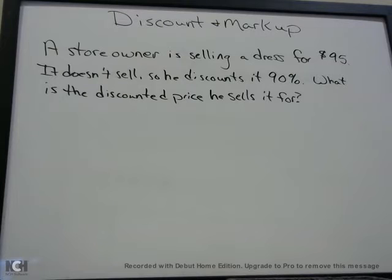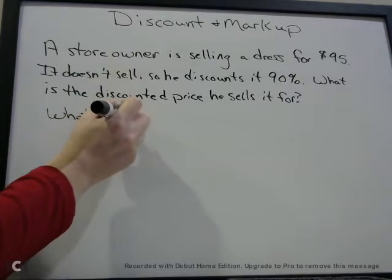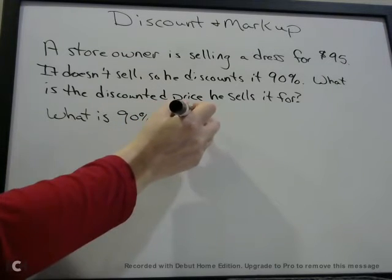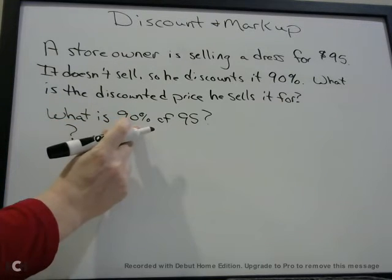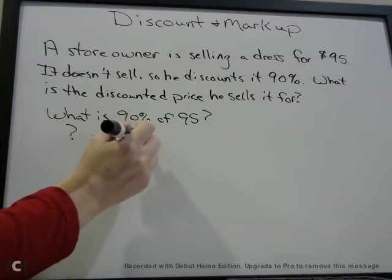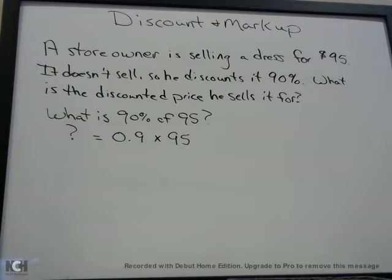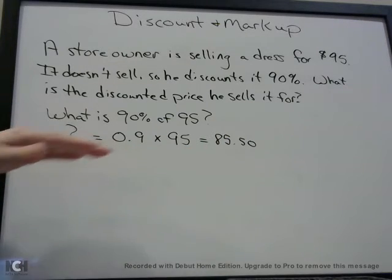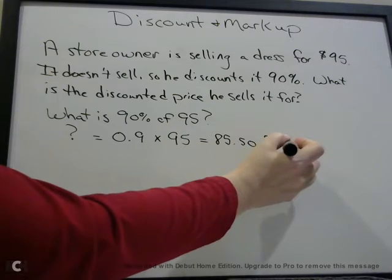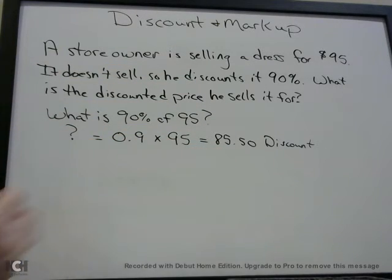You're selling it for $95 and you decide to take 90% off — discount it by 90%. So ask yourself: what is 90% of 95? Translate that to math: unknown equals 0.9 times 95. 0.9 times 95 equals $85.50. That is the discount — that is not the final price. That's how much he's marking it down, so he's discounting it by $85.50.